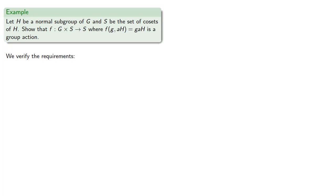Well, don't believe me, we'll verify those requirements. So first, we need to see what happens if we apply F to the identity and a coset. So first of all, by the definition of our function F, F applied to EAH is E applied to AH.